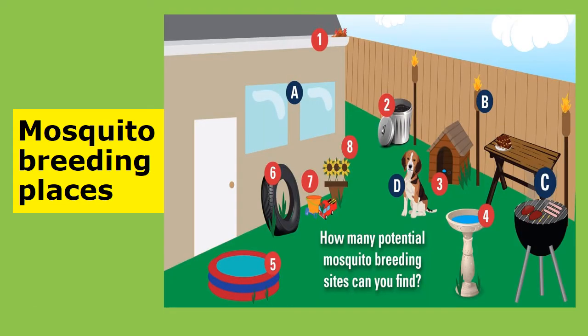Mosquito breeding places. Now look at the picture and you can see a whole lot of places where mosquitoes can breed. So you need to make sure you turn them down and there isn't any water in them so mosquitoes cannot breed.